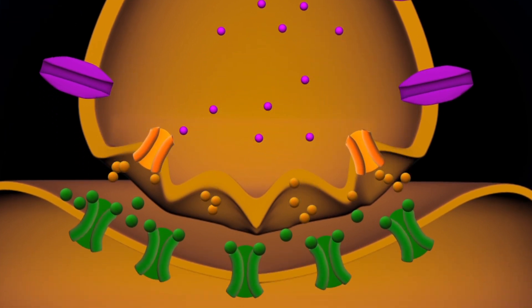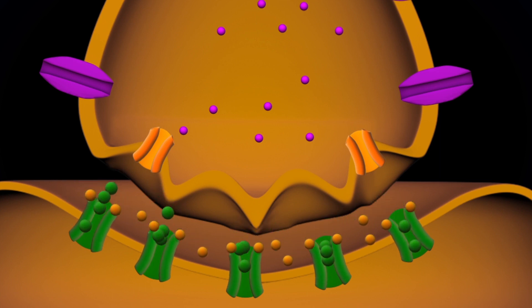Dopamine molecules bind to receptors on the postsynaptic neuron, causing sodium channels to open. Sodium ion diffusion causes the neuron to become more positive, but not enough to generate an action potential.